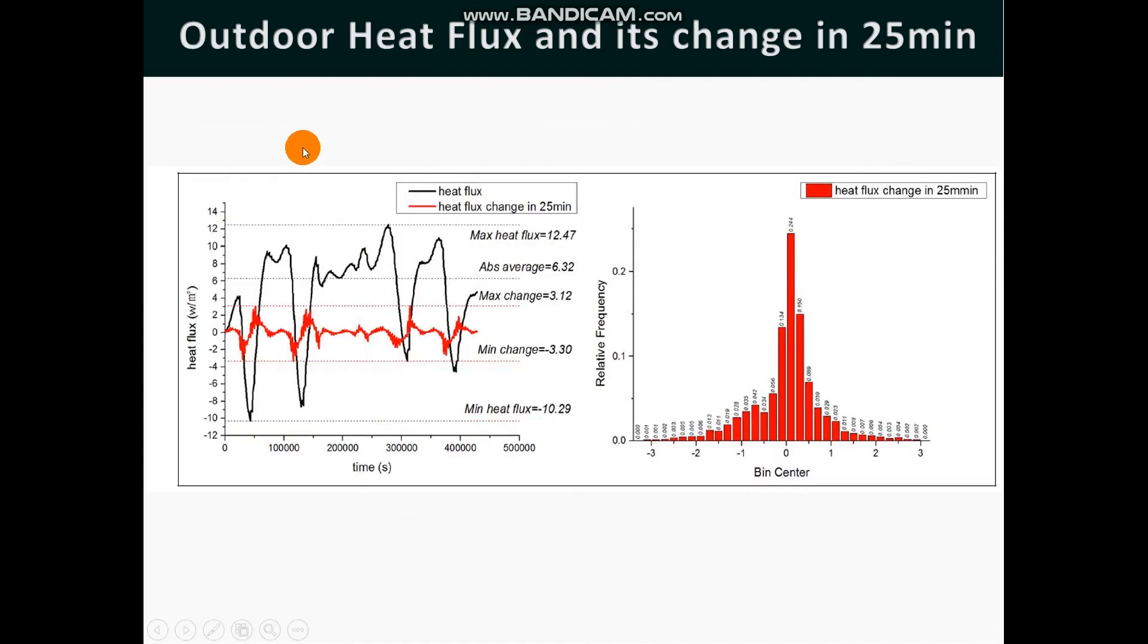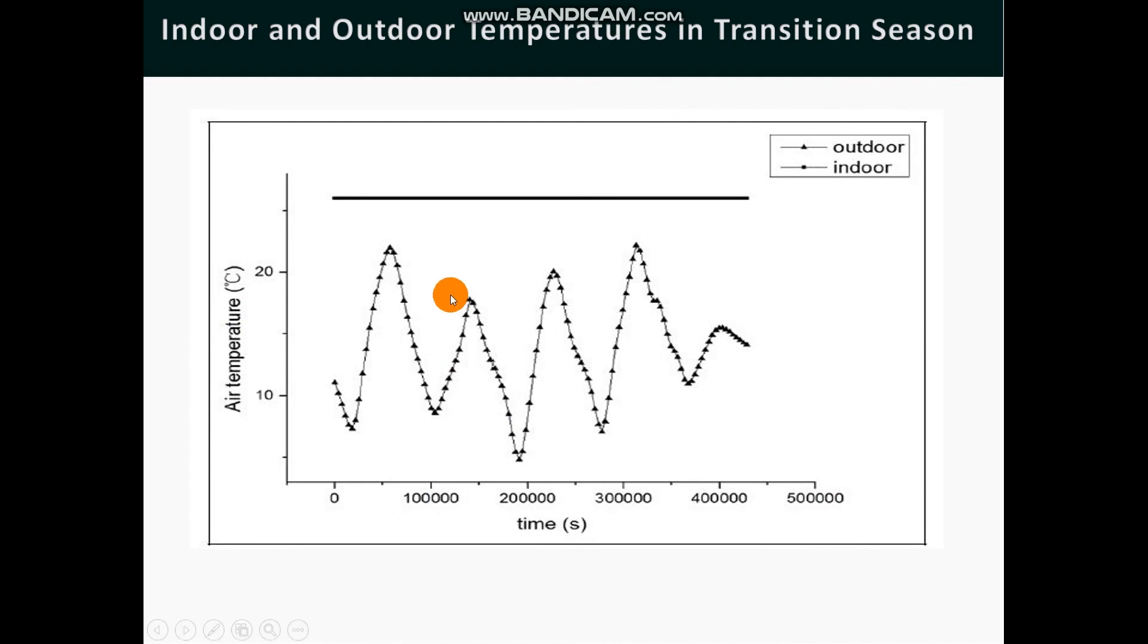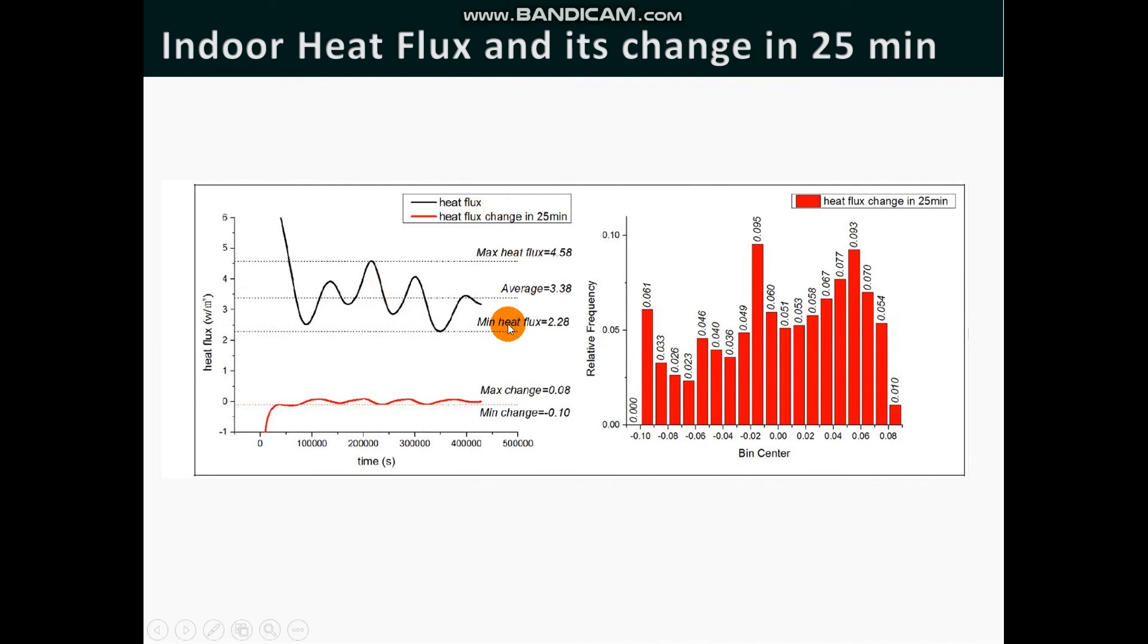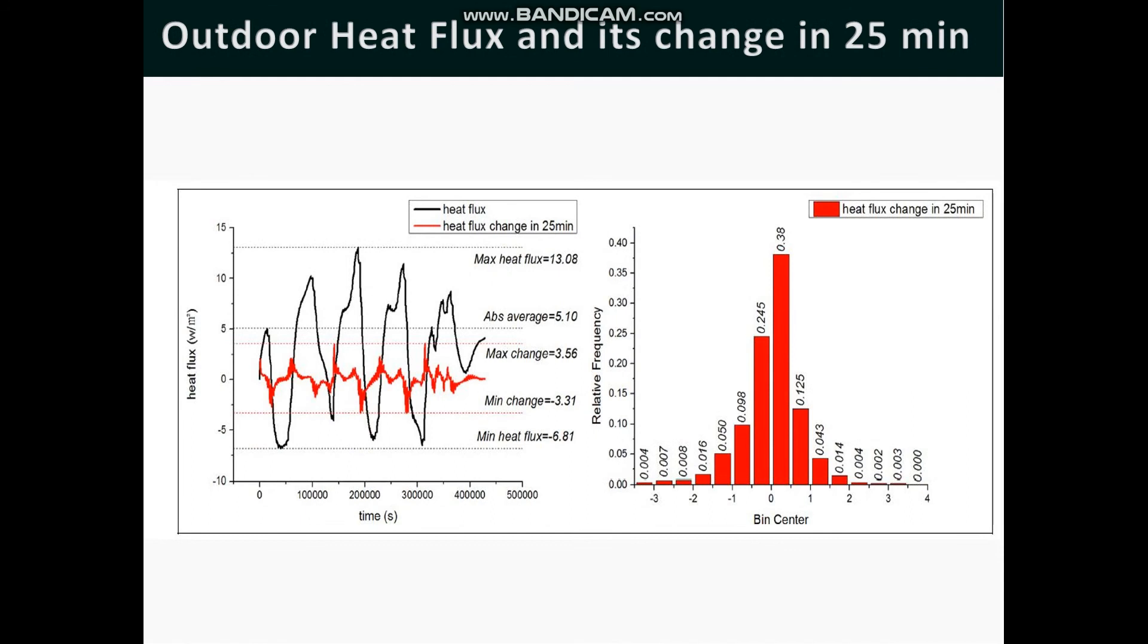Similarly, the graph has been plotted for the outdoor heat flux and its change in 25 minutes and here we see the red graph indicates the change in the flux and it's almost close to zero. Similar analysis has been done for the transition season and the graph shows the relevant measurements of outdoor and indoor temperatures, and similarly for the flux. Here the red graph shows the heat flux change in 25 minutes and the maximum change observed is 0.08 which is quite less.